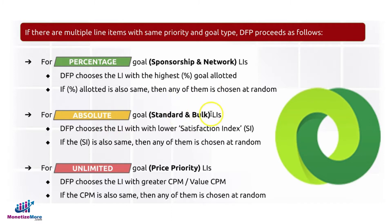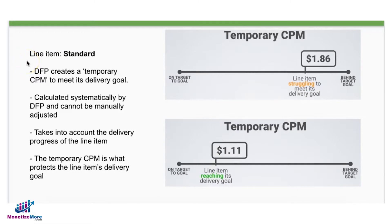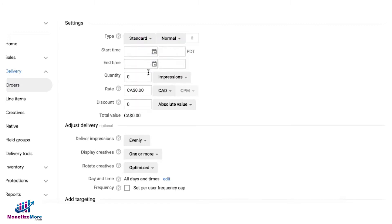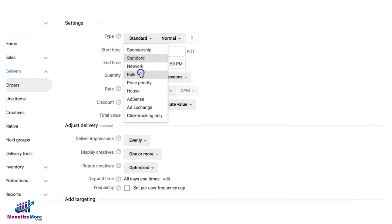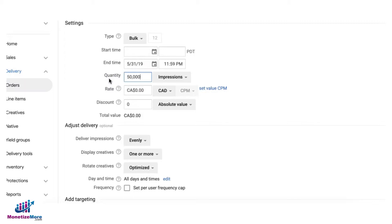Next are absolute-based line item types: standard and bulk. DFP will choose the line item with a lower satisfaction index. That refers to the pace — how close or how far you are from your goal based on your line item settings. When you choose standard, you have a quantity-based goal and you specify your end time. The same applies to bulk — you specify the impressions or quantity as an absolute goal, and you also have a specific end date.